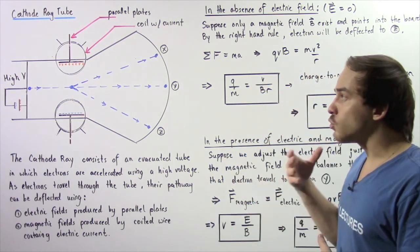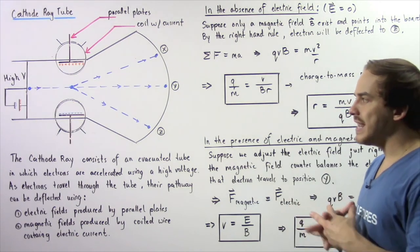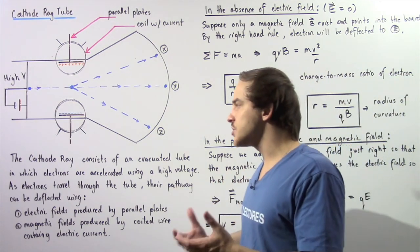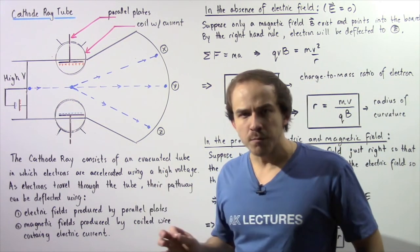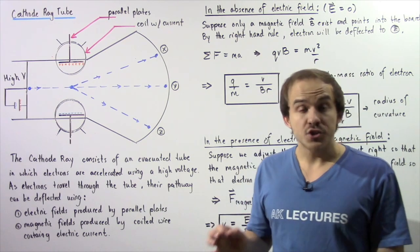Using the results from the oil drop experiment together with this result, we can determine the actual quantity of charge and mass on our electron. The cathode ray tube is a very important instrument because it allowed us to determine the quantity of charge and mass on a single electron.